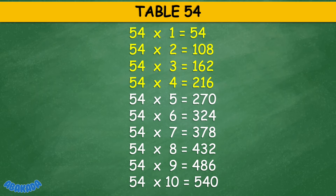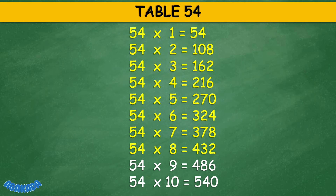Table 54: 54 times 6 equals 324, 54 times 7 equals 378, 54 times 8 equals 432, 54 times 9 equals 486, 54 times 10 equals 540.